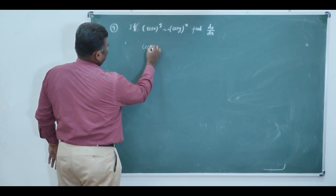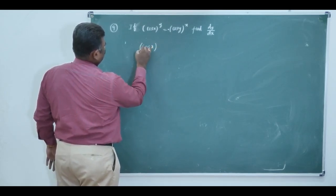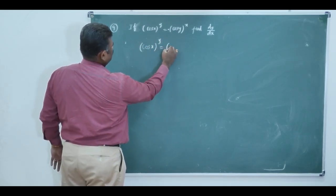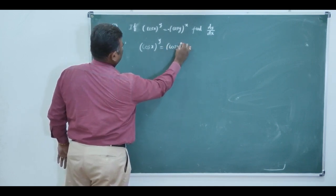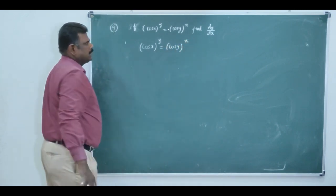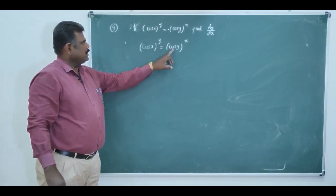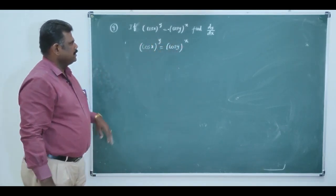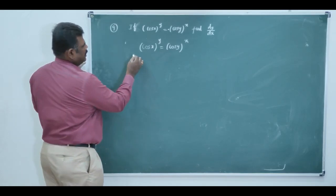Here given cos x to the power y equal to cos y to the power x. See on both sides, both power is a variable. You must take logarithmic differentiation.